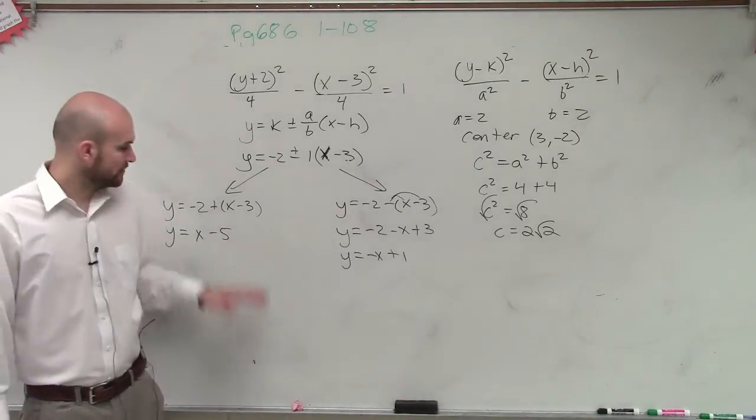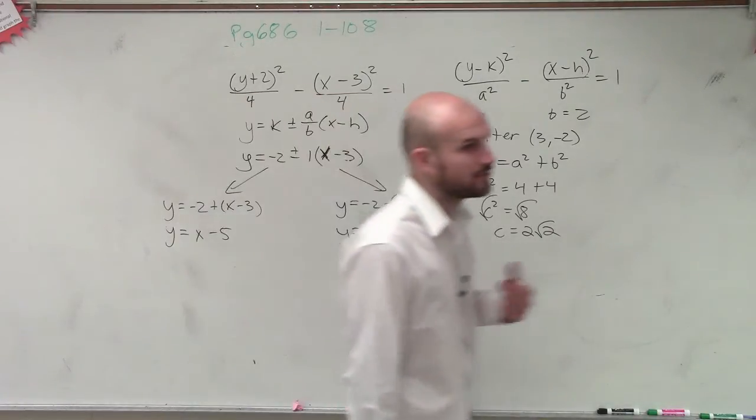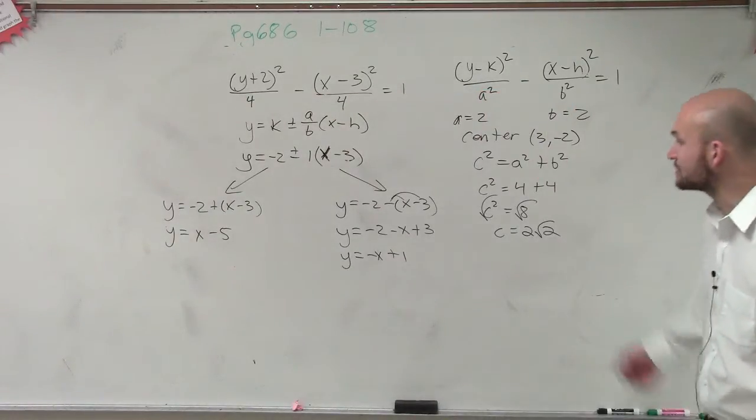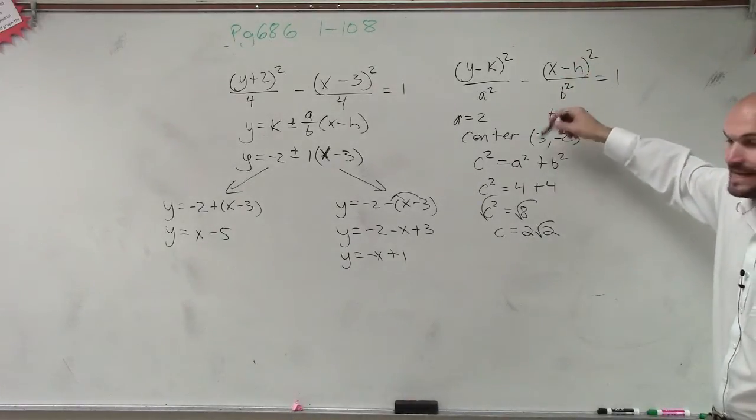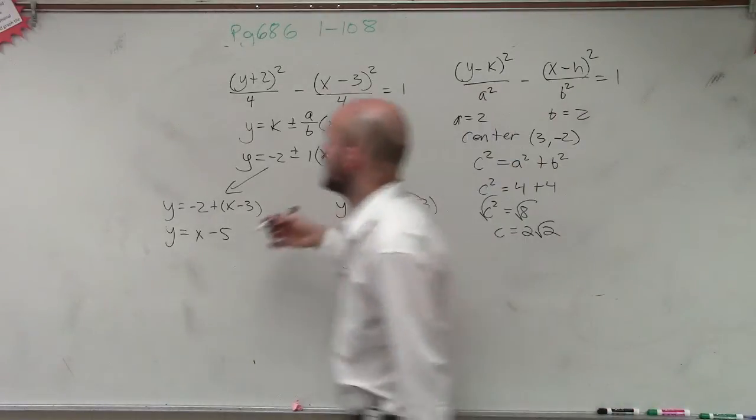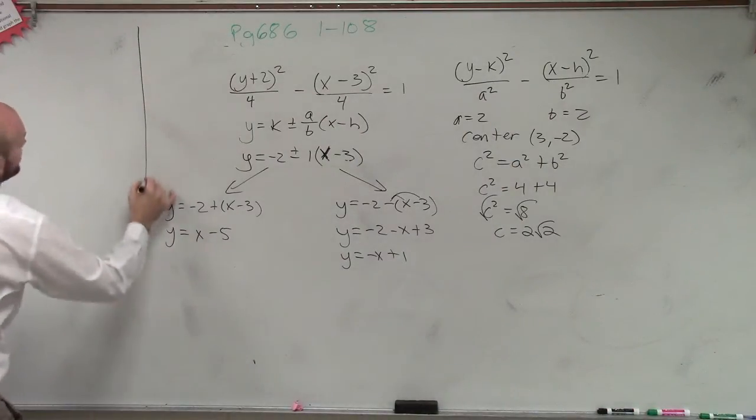So now, these are both equations that I can write to now graph my asymptotes. I know what my a and my c are. That's going to help us define our two foci. And we know the center. So I'll just graph it right here.